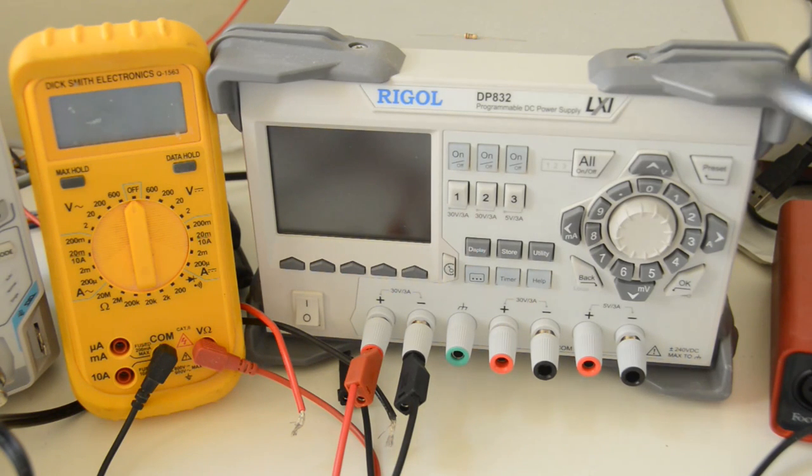Hi, this is the Rigol DP832, which EEVblog did a video about. One of the interesting things about it is that it has a common negative rail for channels 2 and 3.